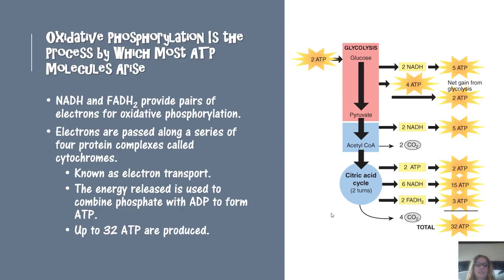Oxidative phosphorylation is the process by which most of the ATP molecules arise from cellular respiration. NADH and FADH2 provide pairs of electrons for oxidative phosphorylation. Electrons are passed along a series of four protein complexes called cytochromes, known as the electron transport chain. The energy released is used to combine phosphate with ADP to form ATP, and up to 32 ATP are produced in that process.